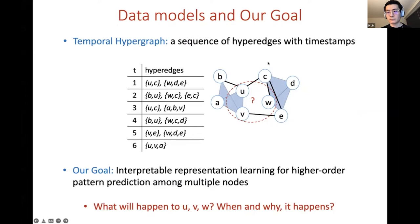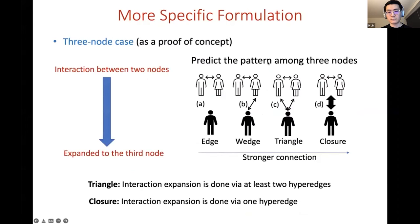Next, let me be more specific about our goal. We focus on the prediction among three nodes as a proof of concept. In this paper we study the case where two nodes start their interaction and after that we would like to predict how their interaction may expand to a third node.